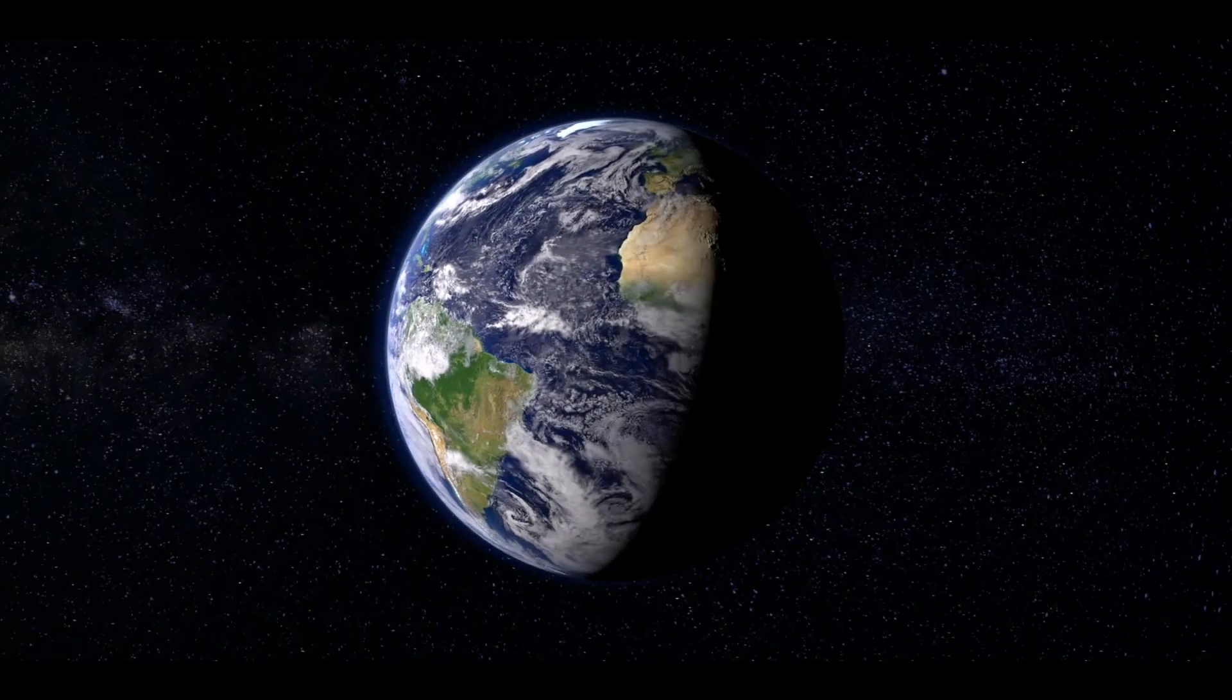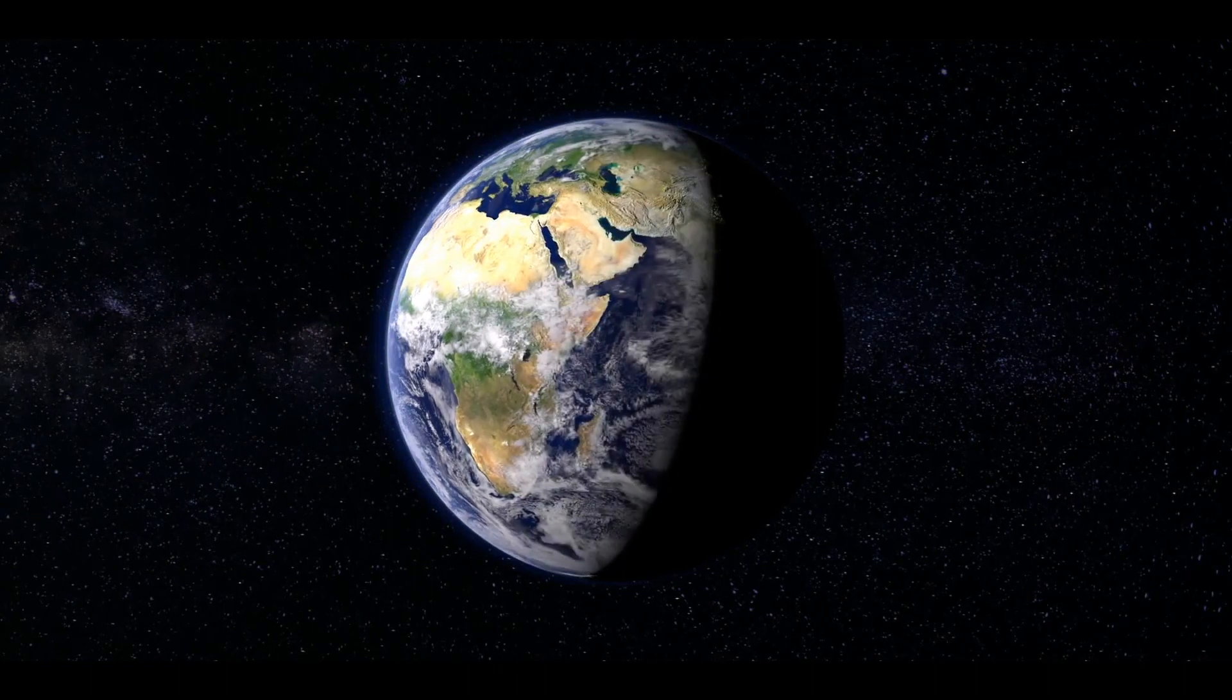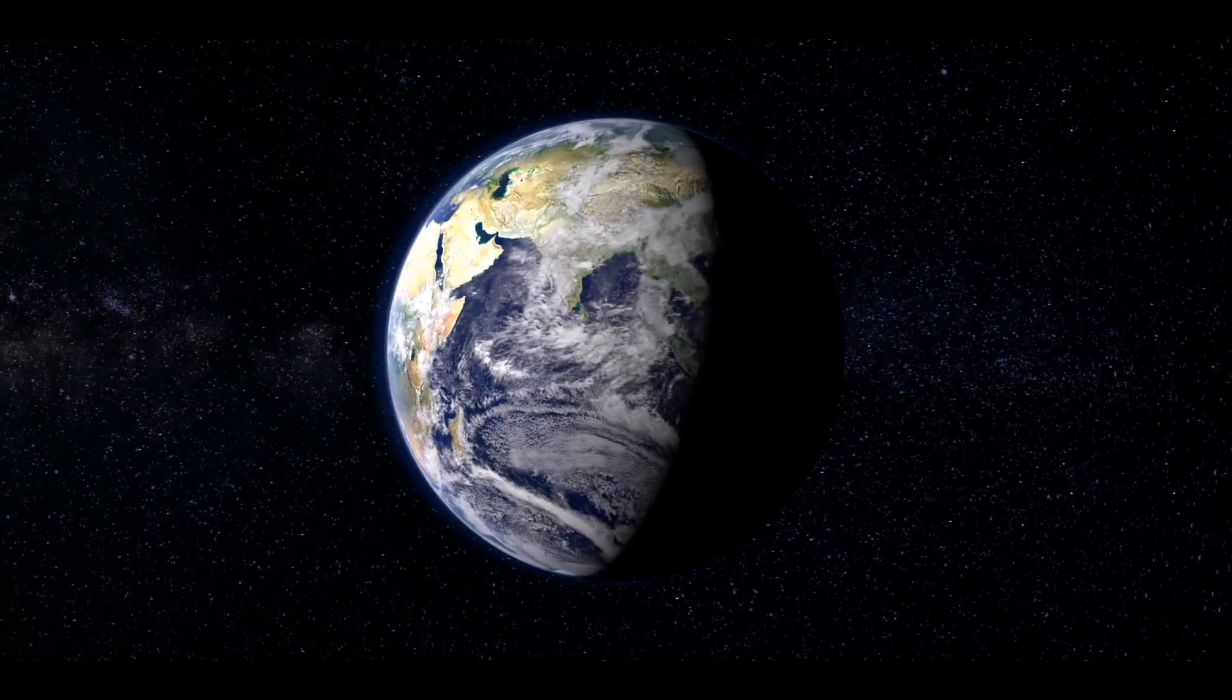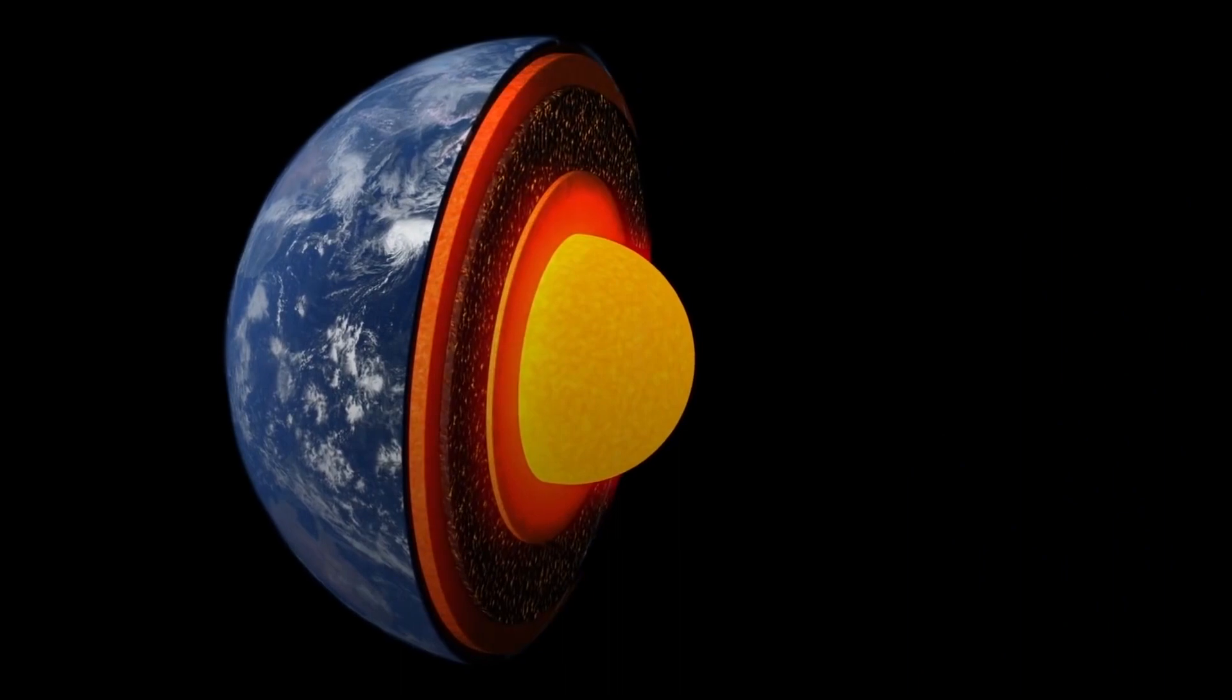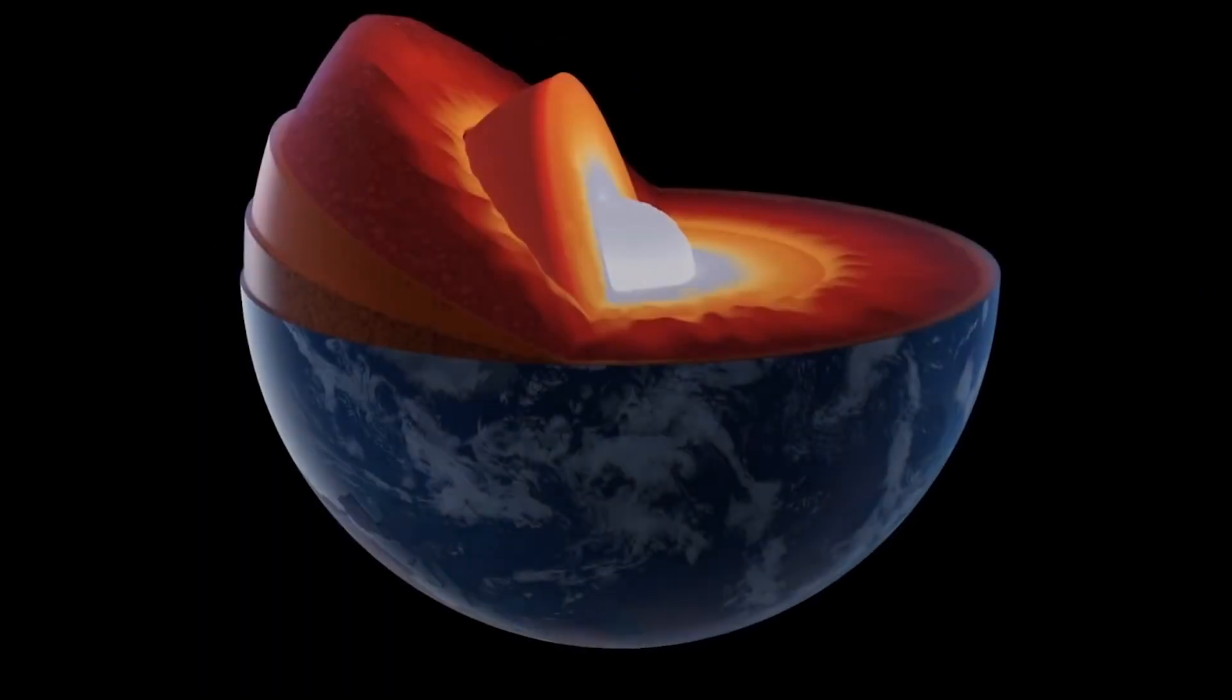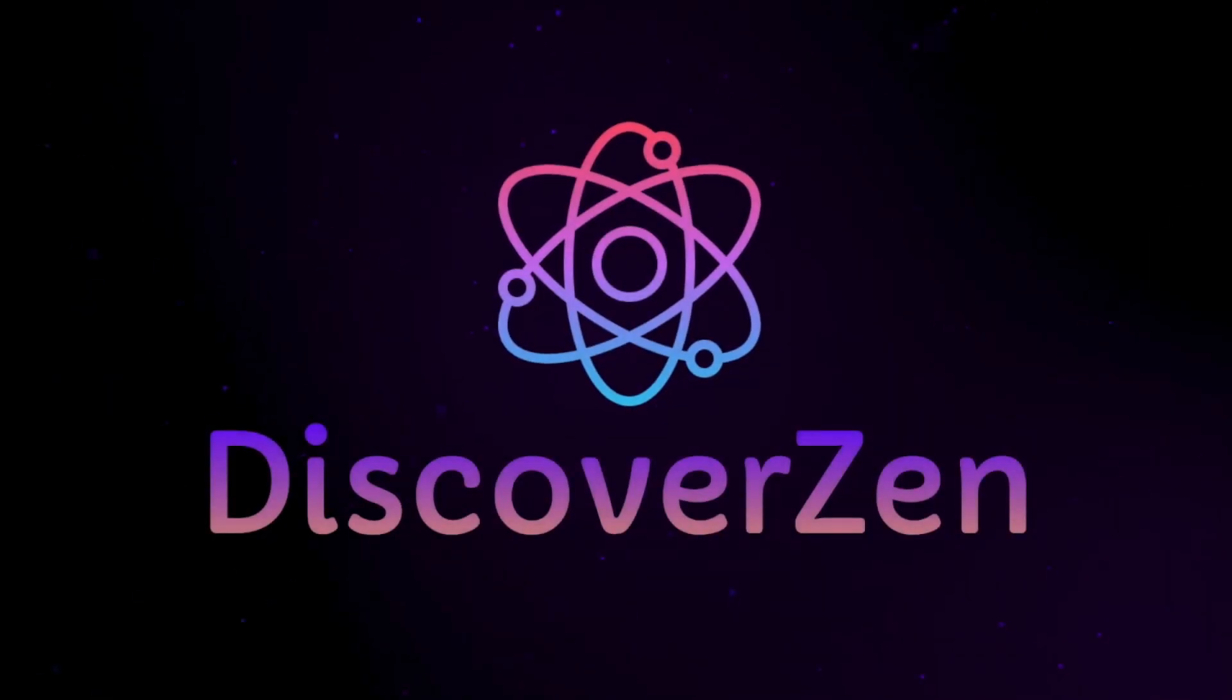Our planet is really a role model for any carbon-based life to exist in a part of our universe. There are many parameters that a planet should have for life to thrive. But can we remove some elements from our planet and still expect life to exist? Let's speculate about what if the Earth's core cooled down in today's video of Discover Zen.